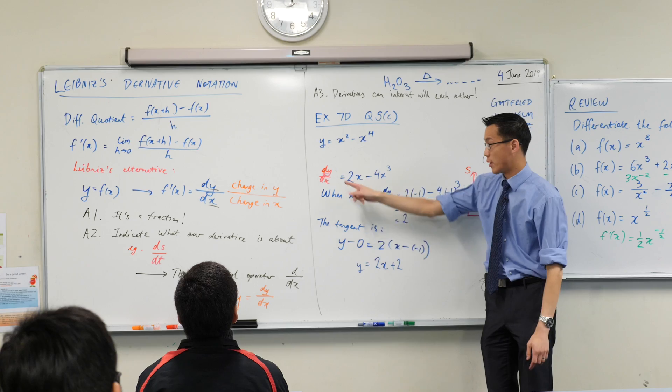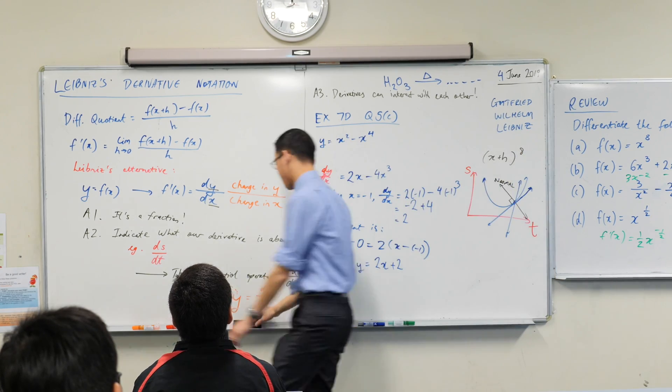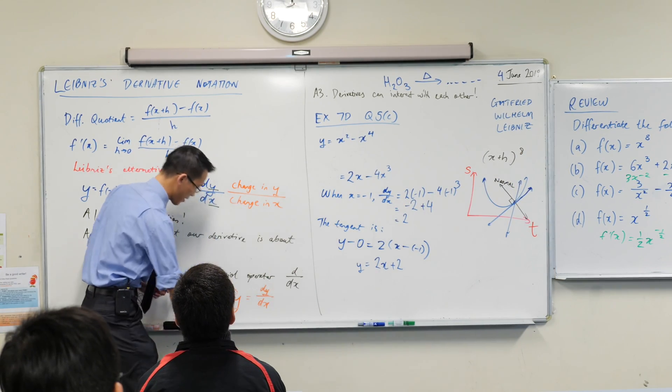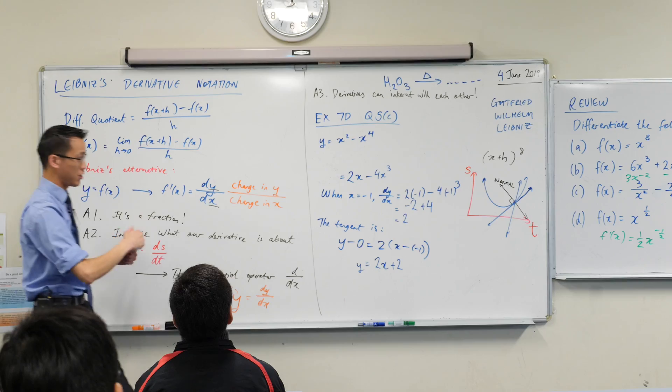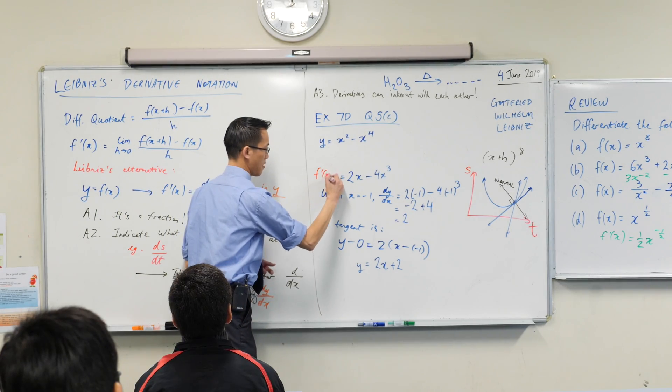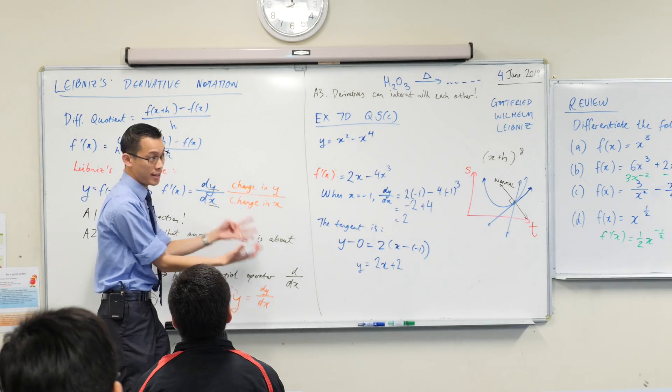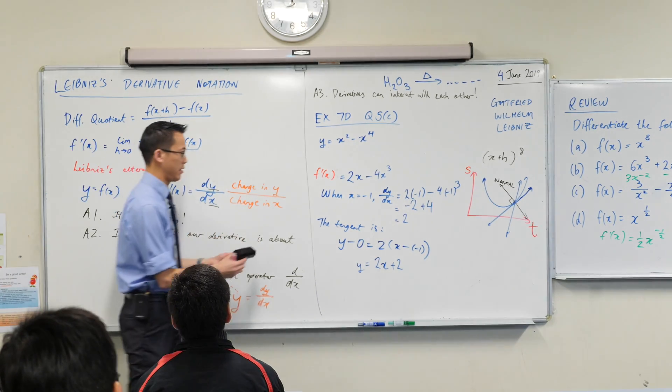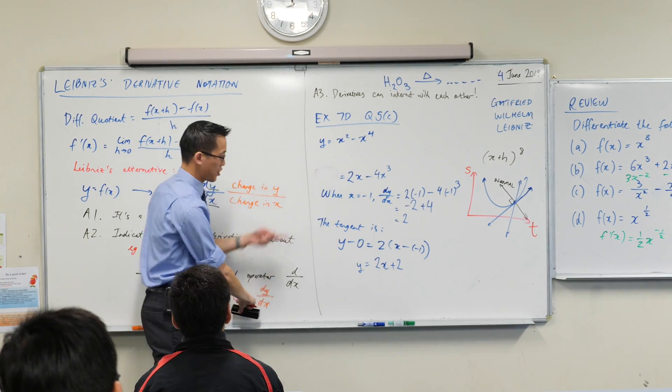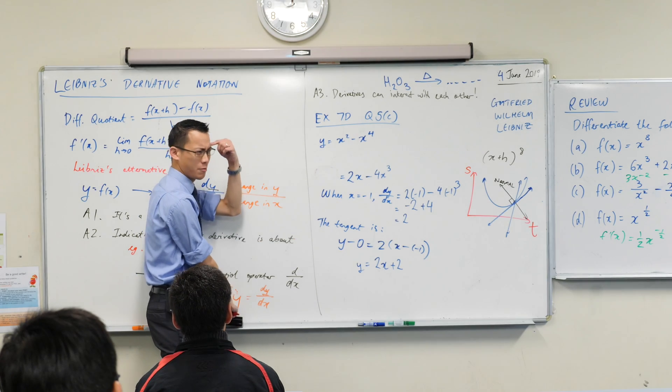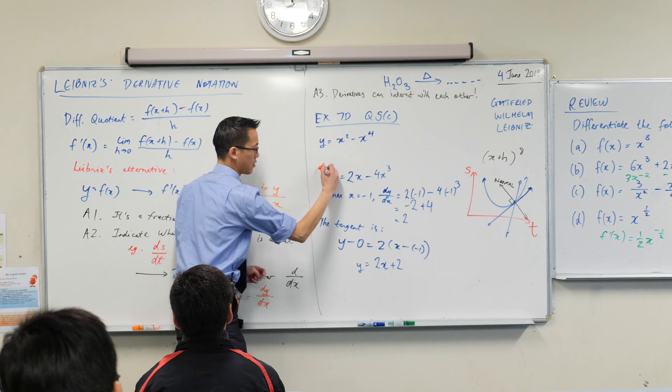That is another common error, by the way. People will write instead of this, because they like this original notation, they'll just write this. And the marker will be like, where the dickens does this come from, right? What is this referring to? It's not referring to anything in the question. So it's not valid in this context. So there's the first mistake, just saying equals, because it's the next thing that you're thinking of. Please don't do that.